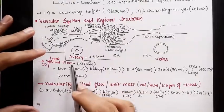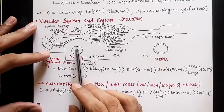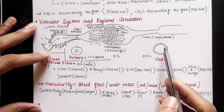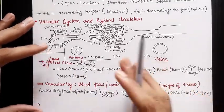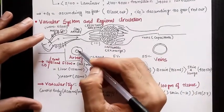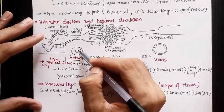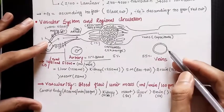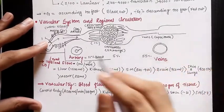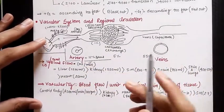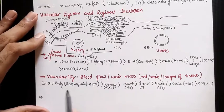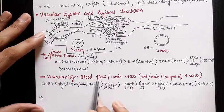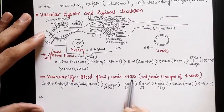If you observe the cross-section of arteries and veins, the lumen of the artery is smaller than the lumen of the vein. Veins have thinner walls while arteries have thicker walls.